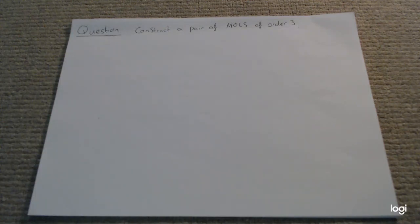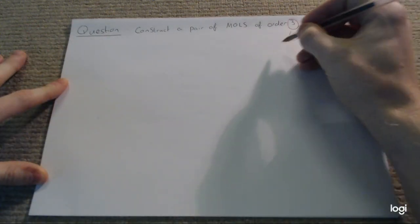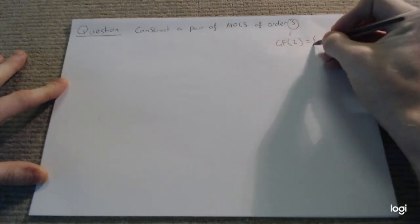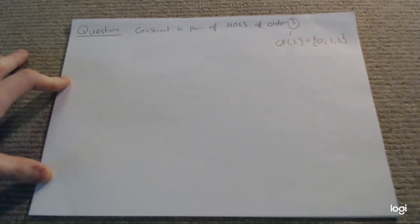We're going to construct a pair of mutually orthogonal Latin squares of order 3. Order 3 means we are in GF2, which is essentially the alphabet 0, 1, and 2.